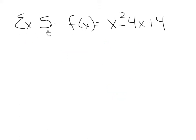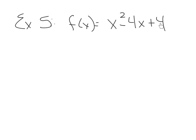Example 5 is on the bottom of page 254. We're finding the vertex of f(x) equals x squared minus 4x plus 4. This is not in vertex form — I can't see the horizontal shift or the vertical shift because this is in standard form. Instead, when I have a quadratic function in this form, I'm going to use a formula called the vertex formula.